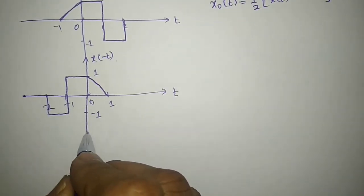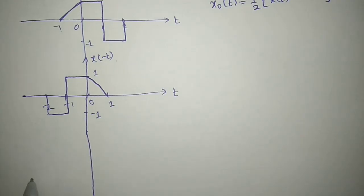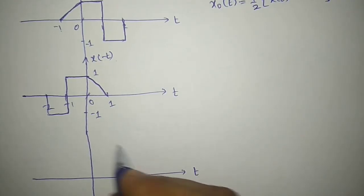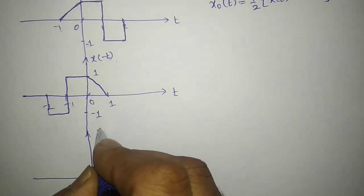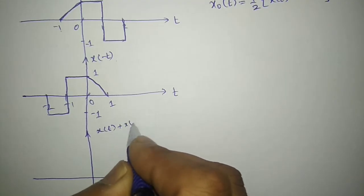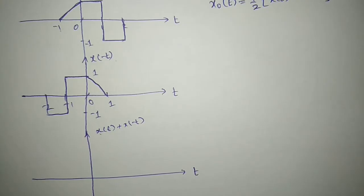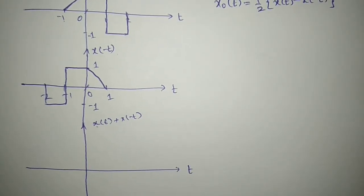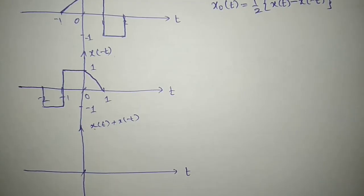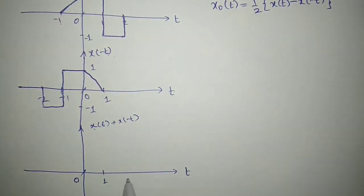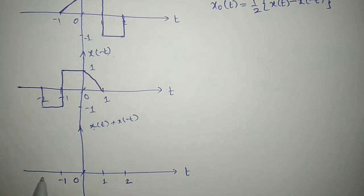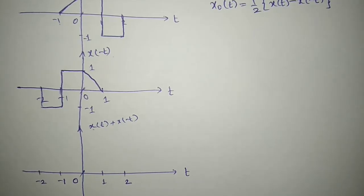The next task is to sketch the addition of these two signals, x(t) + x(-t). First I add them, then I divide by 2 to get the even part. To add, I first write down all the possible limits. With respect to x(t) I have 0, 1, 2. With respect to x(-t) I also have minus 1 and minus 2. So these are the possible limits for the addition of the two signals.